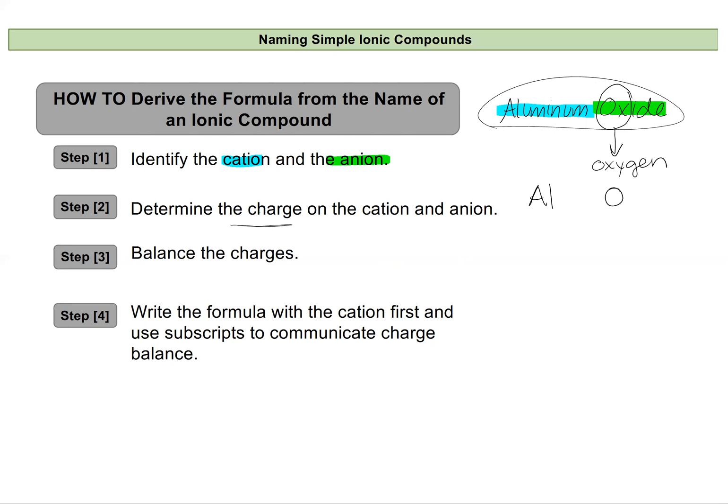Now I need to determine the charge that each would have. Aluminum is in the third group, so it's plus three. And oxygen is in the sixth group, so it'll have a negative two charge. And then I balance the charges. This is where we showed our crisscross rule before. So I would have aluminum two, oxygen three, taking care to write my cation first and then my oxygen, which is my anion second, and using subscripts to show the ratio that these combine to form an overall zero charge.